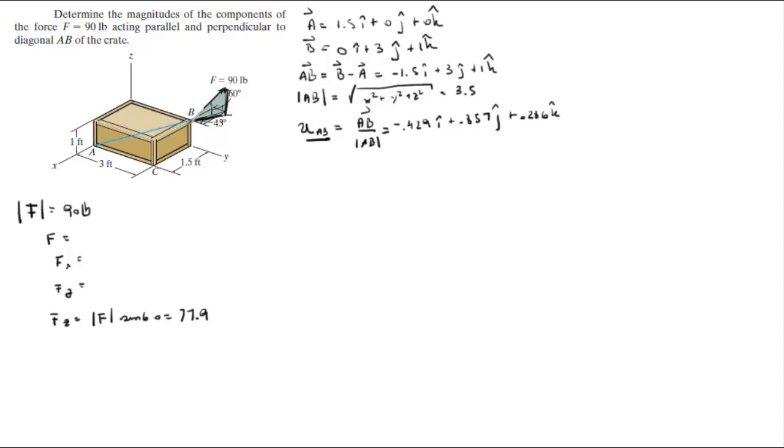Now we're going to find this vector, which is the projection of F into the x and y plane. As you can see, this vector runs along parallel to the x and y plane. So this projection can be found by doing the magnitude F times the cosine of 60, and it comes out to be 45.